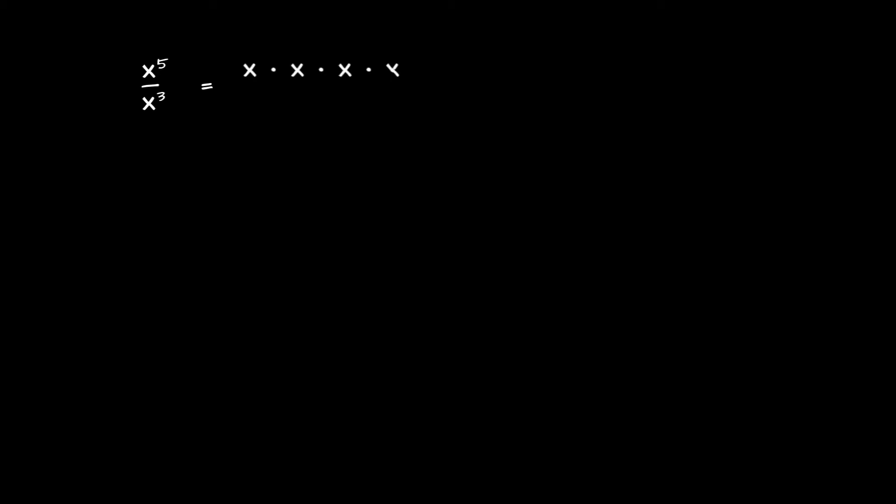Let's press on and see what else we can discover about exponential expressions. We're looking at one exponential term, x to the power 5, divided by another, x to the power 3. Is there a way we can simplify this expression? There is, and we can think about it by appealing once again to the definition of exponential notation: the numerator is x multiplied by itself five times.